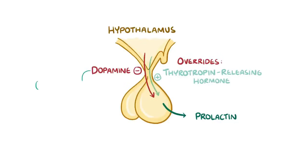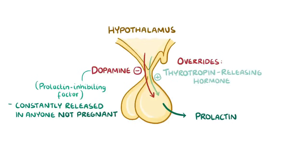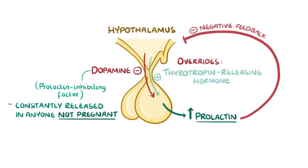That's why dopamine is known as prolactin-inhibiting factor, and it's constantly released to prevent prolactin release in anyone that's not pregnant. High levels of prolactin in the blood sends a negative feedback signal to the hypothalamus, making it release more dopamine, which then decreases prolactin levels.